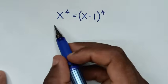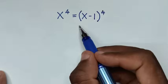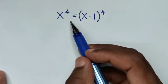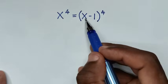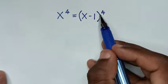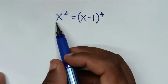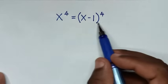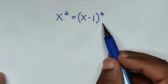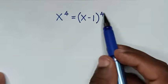Hello, you are welcome to solve this math problem which is x power 4 is equal to x minus 1 bracket power 4. To find the values of x from this equation.